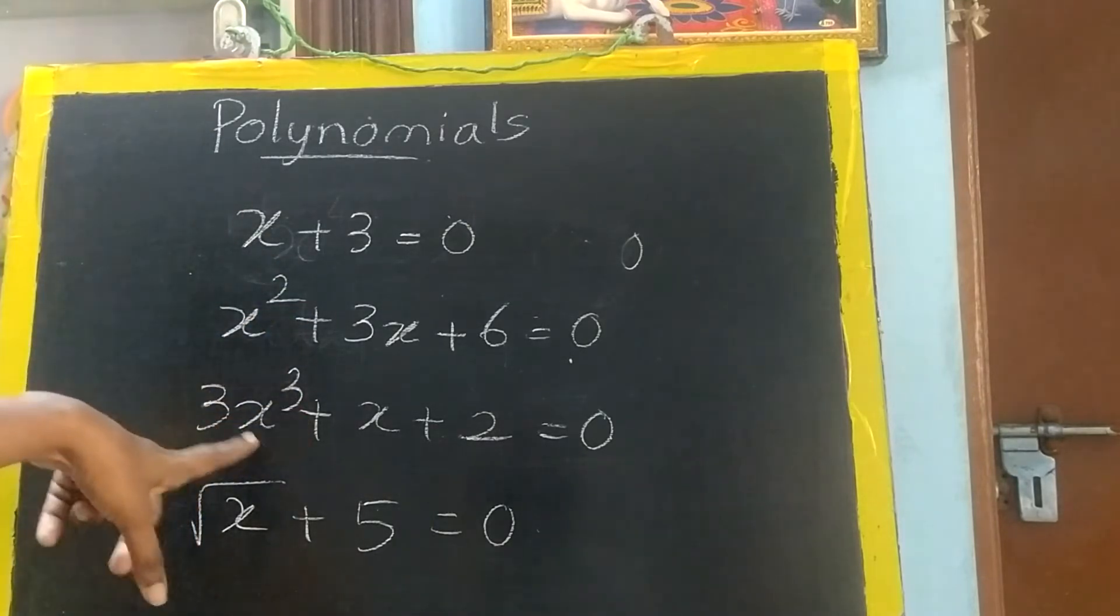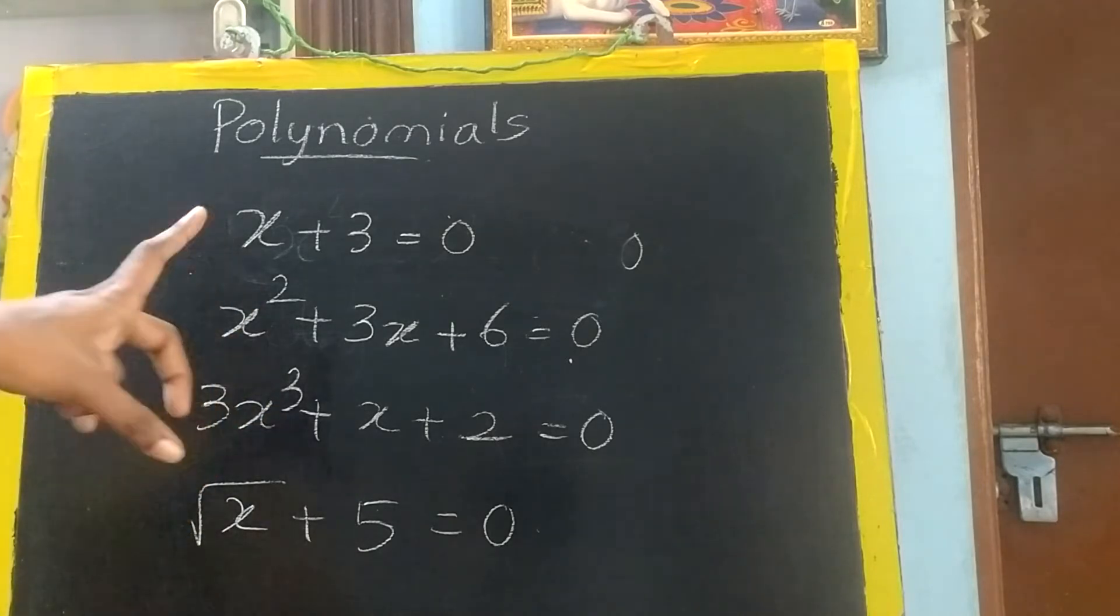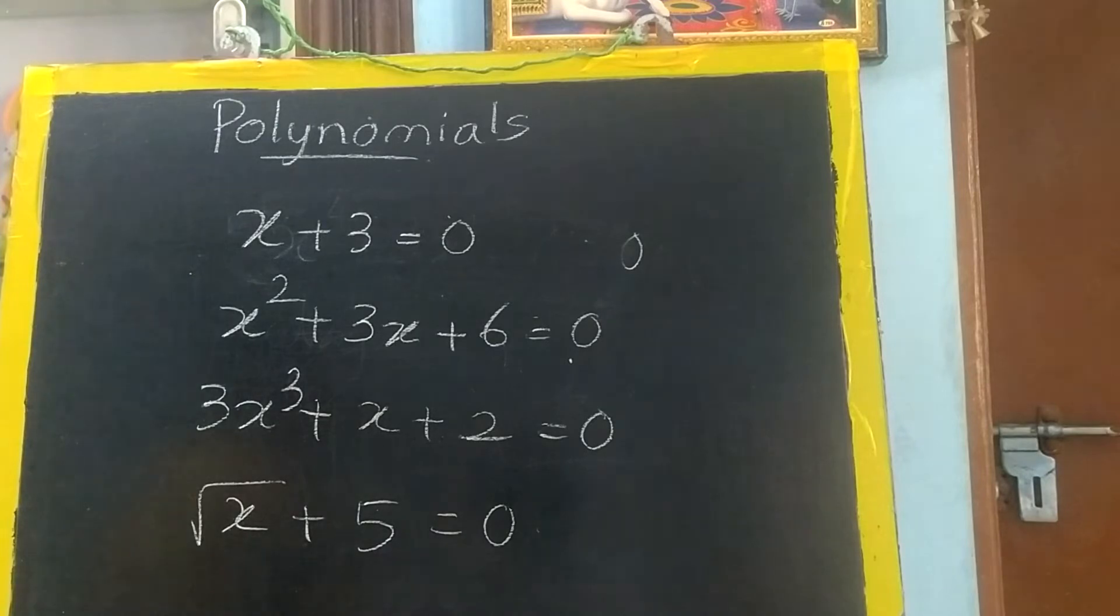Now you see this is having 3. Highest is 3. In this case, it is called as cubic polynomial.